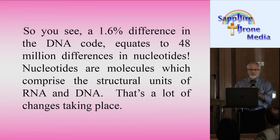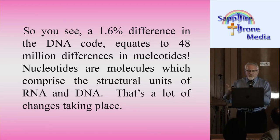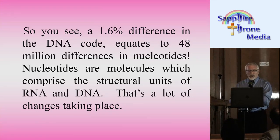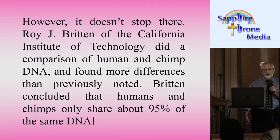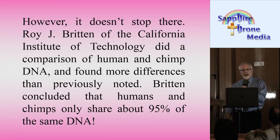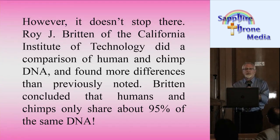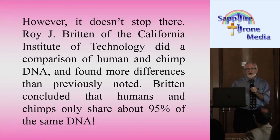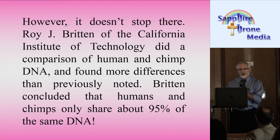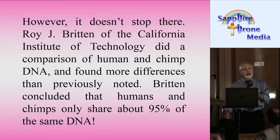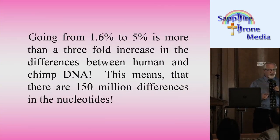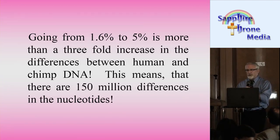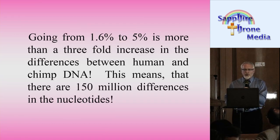So 1.6% difference in the code equates to this huge difference in nucleotides. Nucleotides are molecules which comprise the structural units of RNA and DNA. However, it doesn't stop there. Roy J. Brighton of the California Institute of Technology did a comparison of human and chimp DNA and found more differences than previously noted. Brighton concluded that humans and chimps only share about 95% of the same DNA — going from 1.6% to 5% is more than a three-fold increase in the difference.